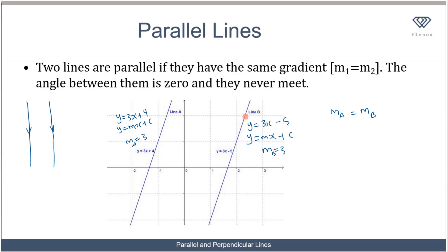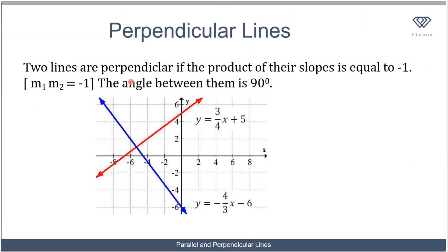How about perpendicular lines? Two lines are perpendicular if the product of their slopes is equal to minus one, that is m1 times m2 equals -1, and the angle between them is 90 degrees. So when we say perpendicular lines, the angle between those two lines is 90 degrees.